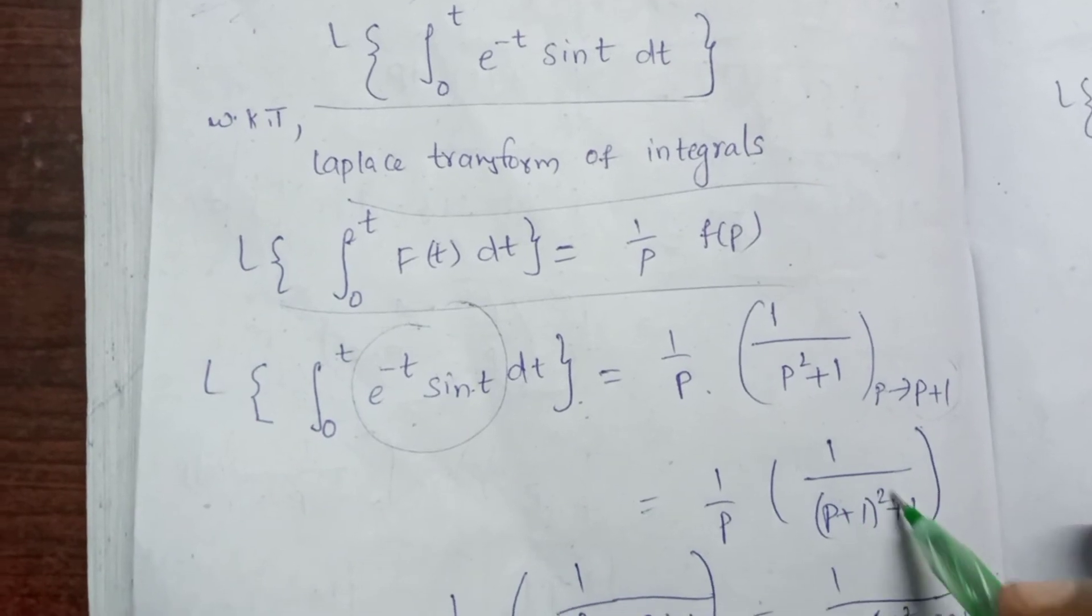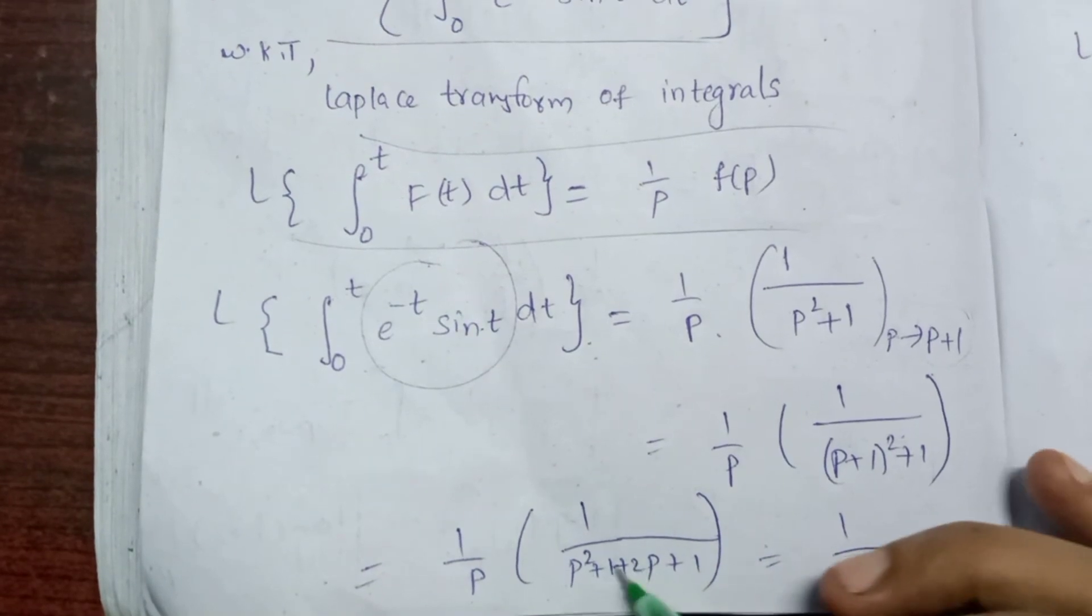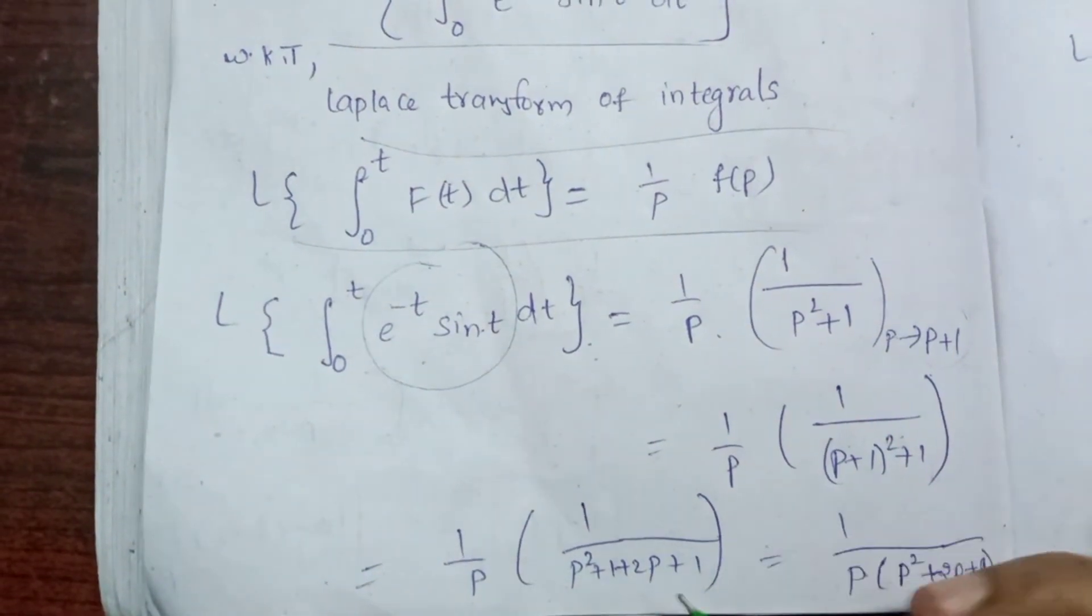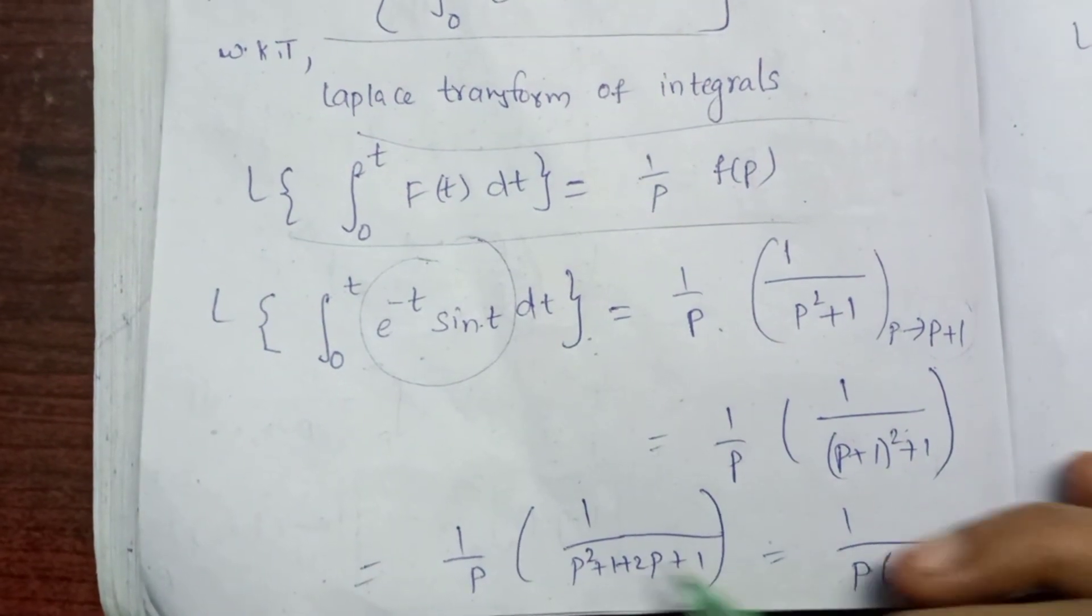So 1 by p plus 1 whole square plus 1, and we multiply by 1 over p. The total answer is 1 divided by p into p squared plus 2p plus 1 plus 1.